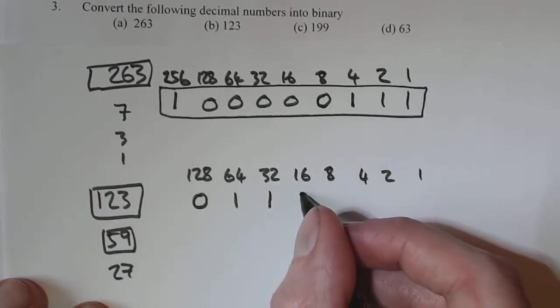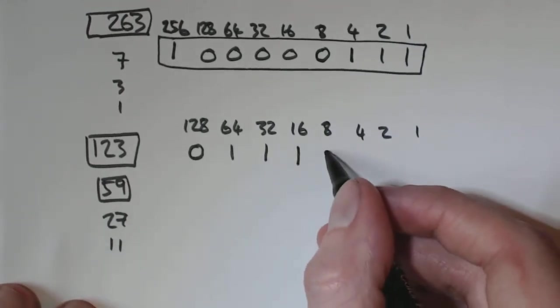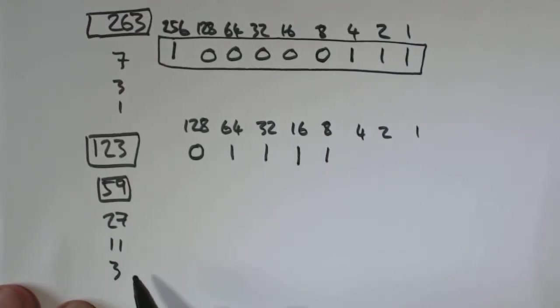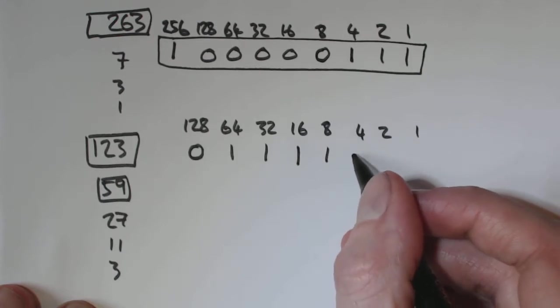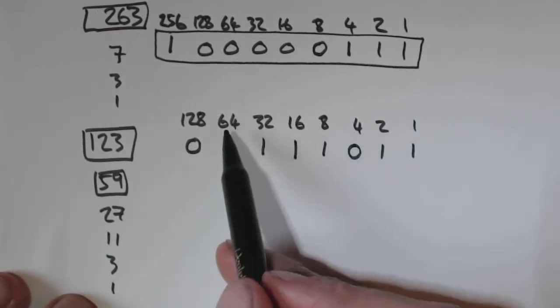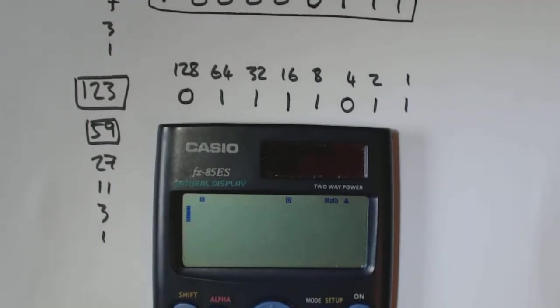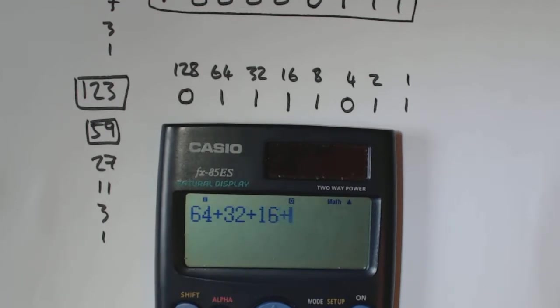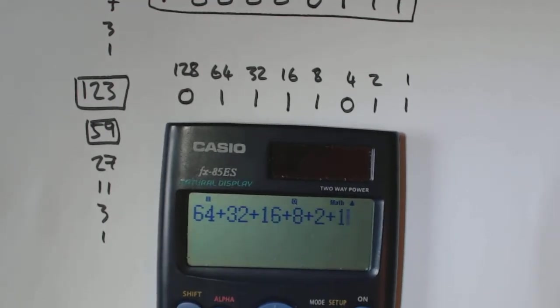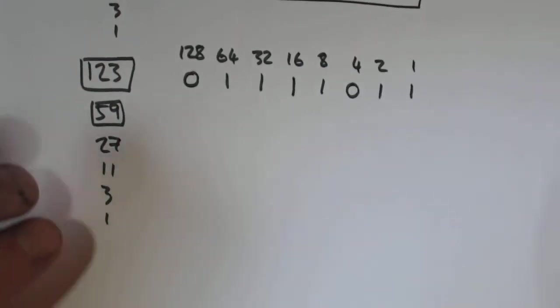16 goes into 27. And then you're left with 11. 8 goes into 27, you're left with 3. So 4 doesn't go into 3, but 2 goes into 3. You're left with 1, and 1 goes into 1. So that's your answer. You'll add these together. So just to prove it. We've got 64 plus 32 plus 16 plus 8 plus 2 plus 1. That end together, that gives you 123.